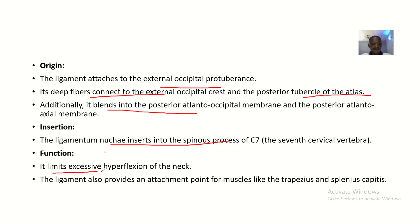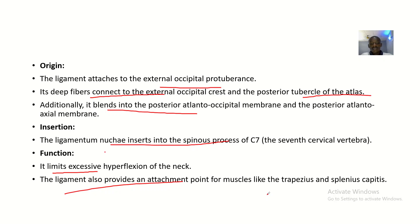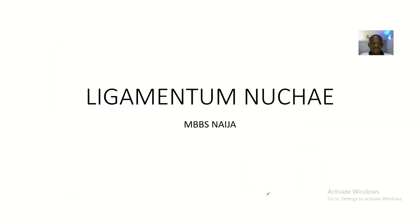The function of the ligamentum nuchae is to limit hyperflexion of the neck. The ligament also provides an attachment point for muscles like the trapezius and splenius capitis muscles. So it provides attachment for the trapezius muscle and the splenius capitis muscle.